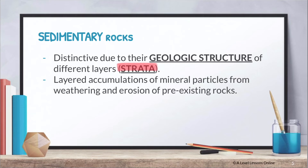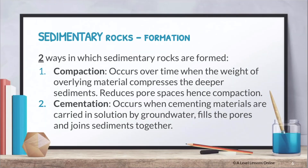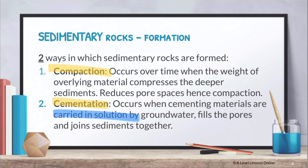There are two ways a sedimentary rock forms: compaction and cementation. Compaction is essentially squeezing very small pieces of rock together to form different layers. Cementation works like cement — it's a solution whereby materials are carried through groundwater, and the pores of the rocks fill up, causing the sediments to join together and form a sedimentary rock.